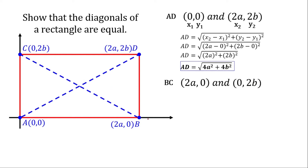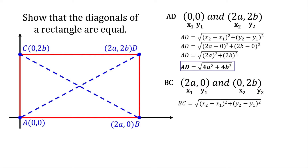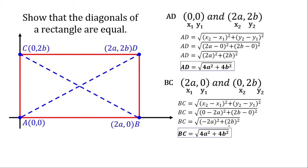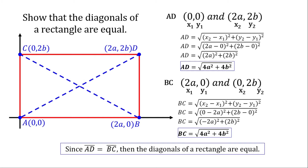Now let's use the distance formula again to find the distance of BC. Assigning point 1 and point 2, and substituting the given: 0 minus 2A and 2B minus 0. Simplifying: negative 2A squared is 4A squared and 2B squared is 4B squared. Since segment AD and BC are equal to each other, the diagonals of the rectangle are equal. That's how we prove this.